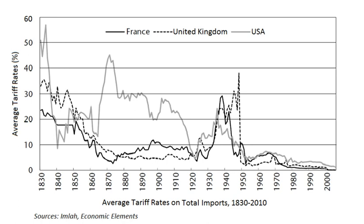Around 1870, Europe's trade deficit with America represented 5% to 6% of the region's imports. It reached 32% in 1890 and 59% around 1900.